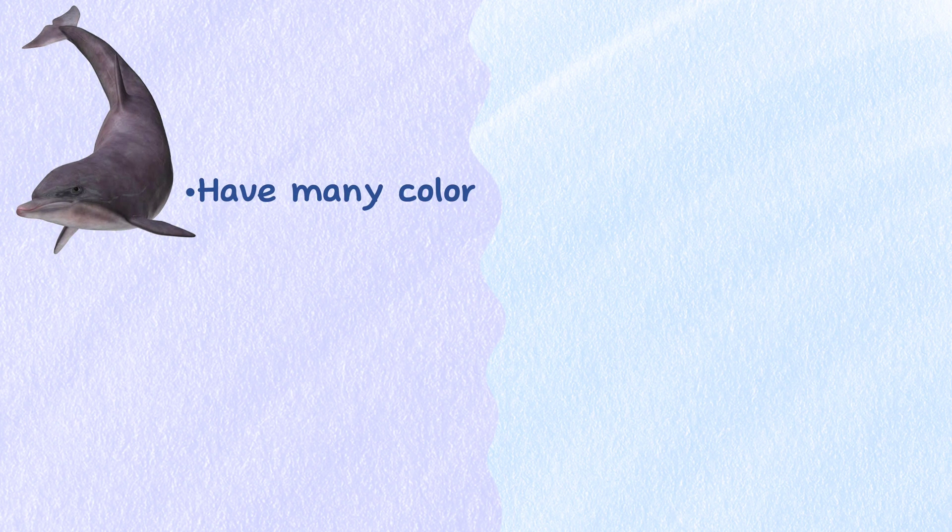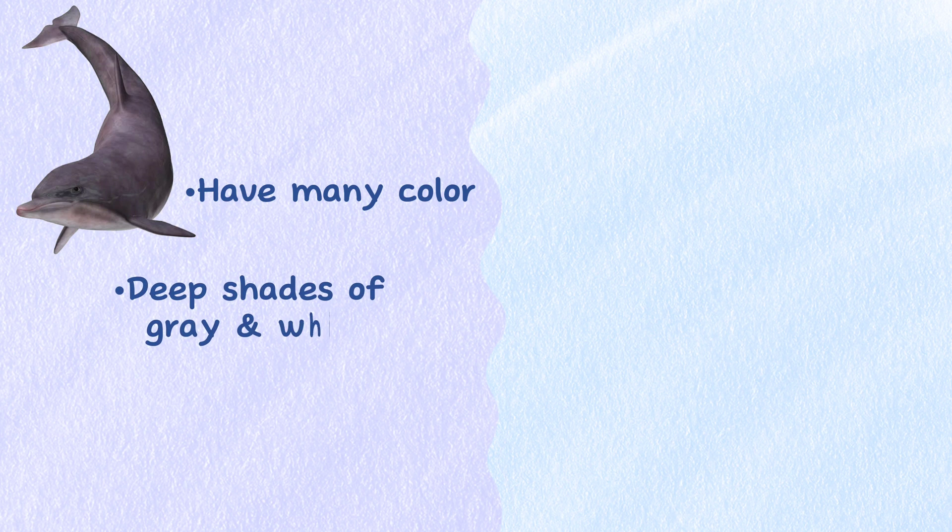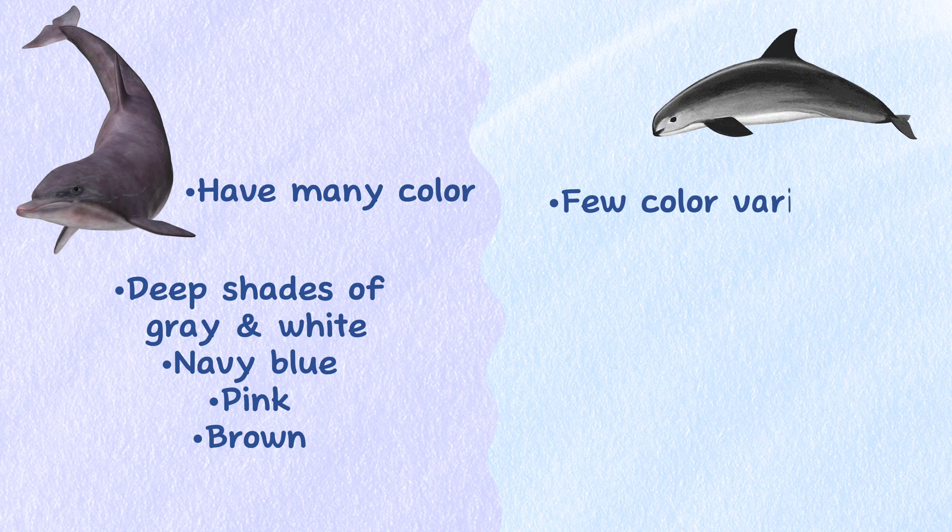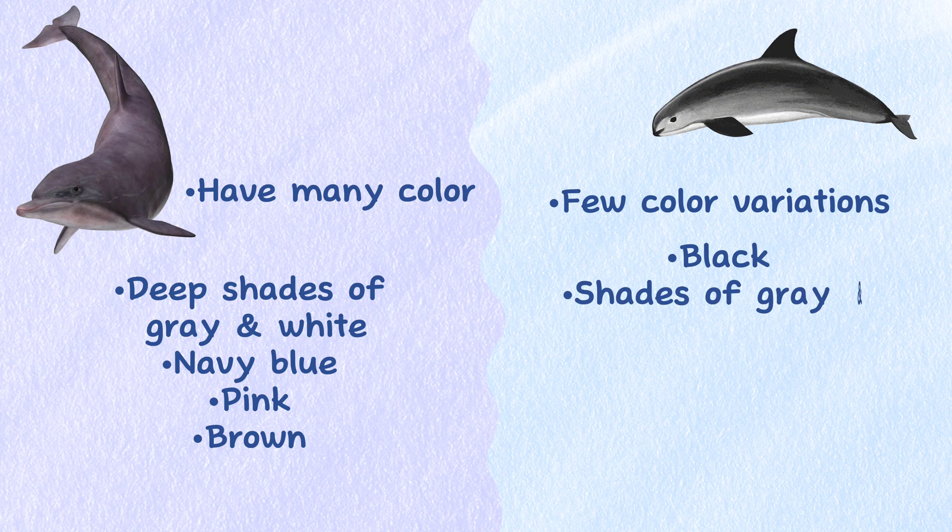Color. Dolphins have many colors amongst their 4 dozen species. While some are deep shades of gray and white, they are also seen in navy blue, pink, and brown. On the other hand, there are extraordinarily few color variations in porpoises. For the most part, they are only seen in black, shades of gray, and white.